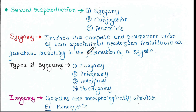Next we will see sexual reproduction. Sexual reproduction is of three types: syngamy, conjugation, and automixis. Syngamy involves the complete and permanent union of two specialized protozoan individuals or gametes, resulting in the formation of a zygote. Syngamy is of four different types: isogamy, anisogamy, hologamy, and pedogamy.